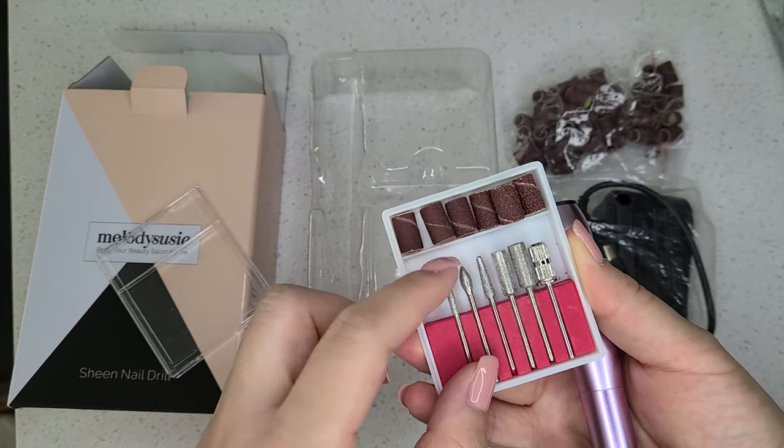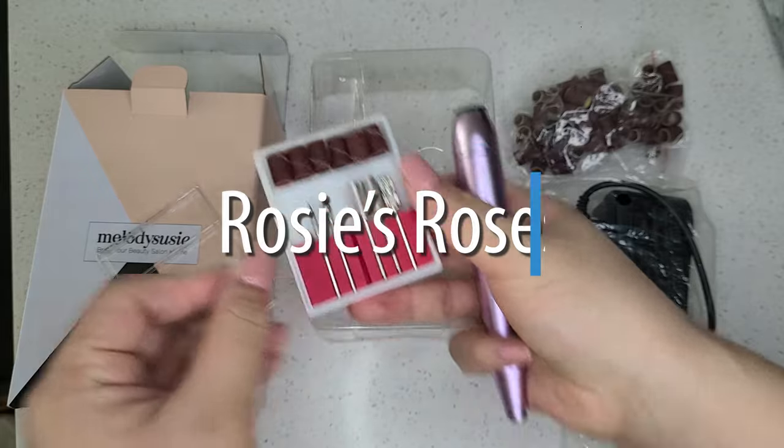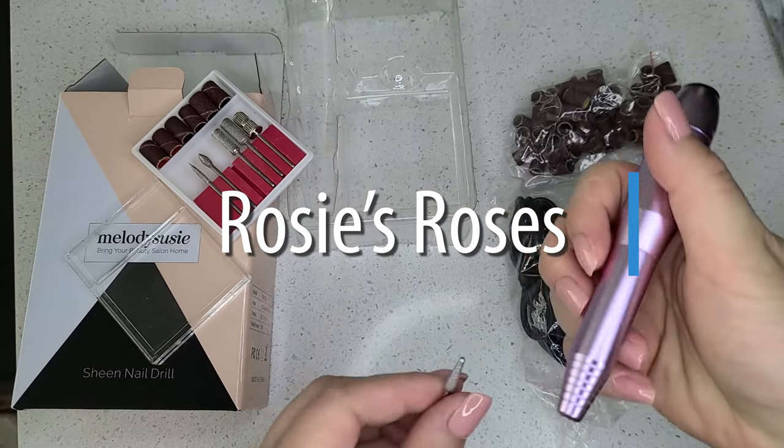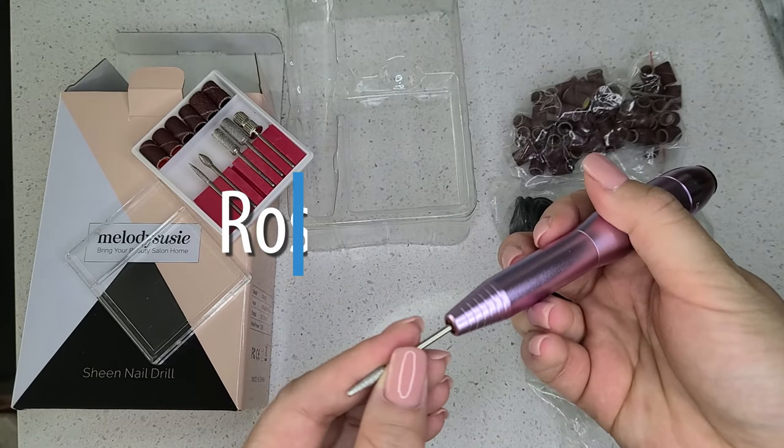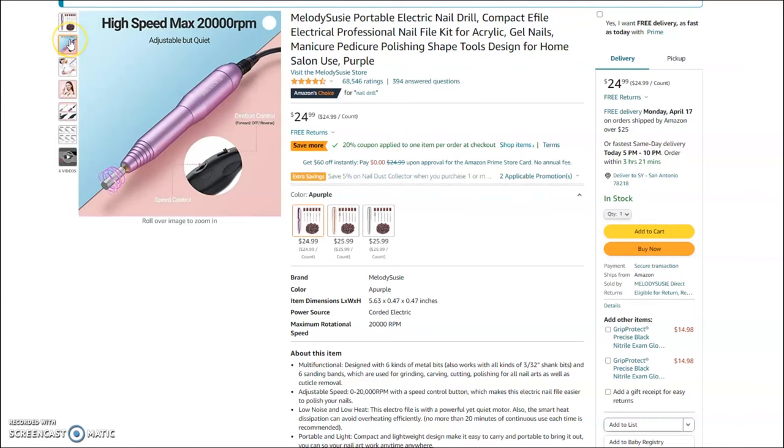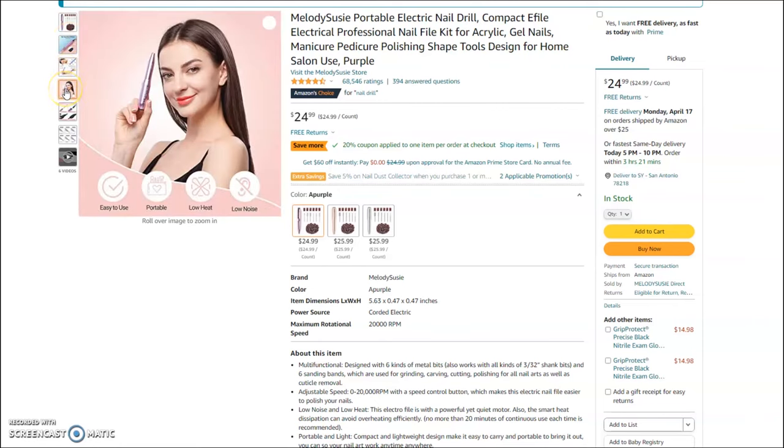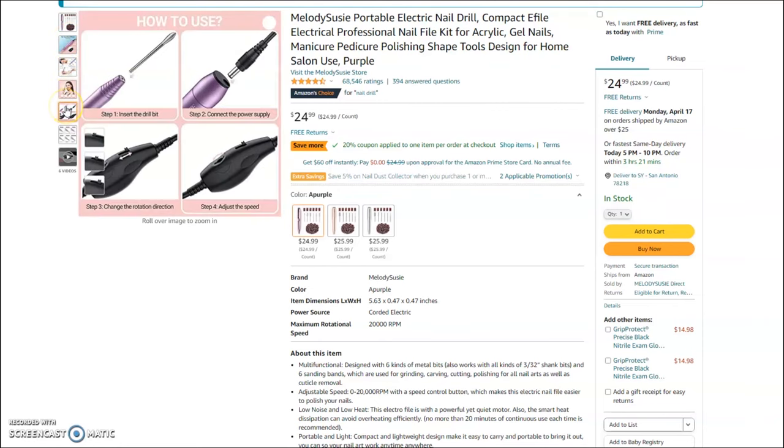So let's just dive right into the rosy report. We'll start with the roses. What is great about Melody Suzy? So this drill is called the Sheen Drill, and it is really strong motor, quote unquote, according to the company, at 20,000 RPM. It is surprisingly quiet with low vibrations. It is compact and easy to put away in a desk drawer.